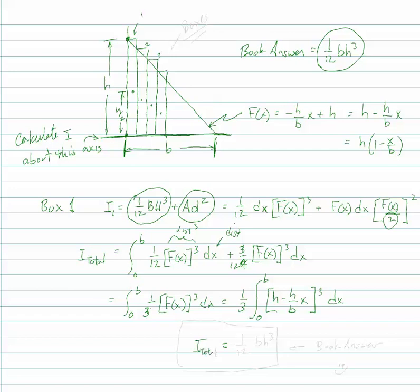I total turns out to be 1/12 BH cubed. And that's the book answer. And that makes me happy. So there you go. This method of using these individual boxes works on just about any shape. I hope this helps, and I'll talk to you next time.